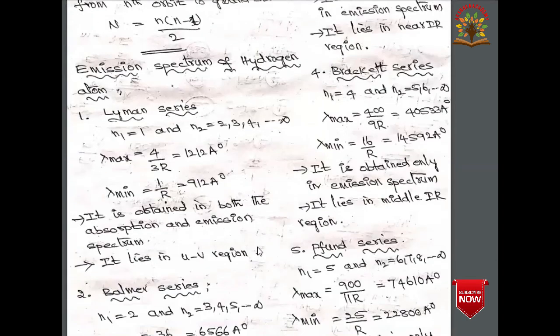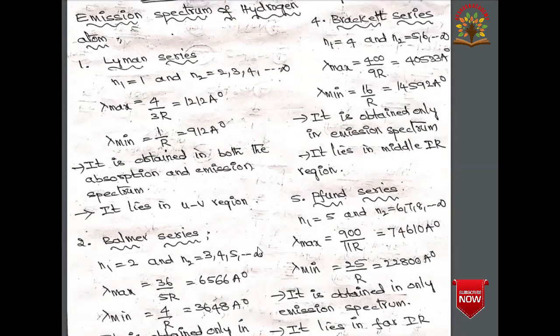The Brackett series is obtained when n₁ = 4 and n₂ = 5, 6, 7, ... ∞. The maximum wavelength is 400/(9R) = 4533 Å and the minimum wavelength is 16/R = 14592 Å. It is obtained only in the emission spectrum and lies in the middle infrared region.